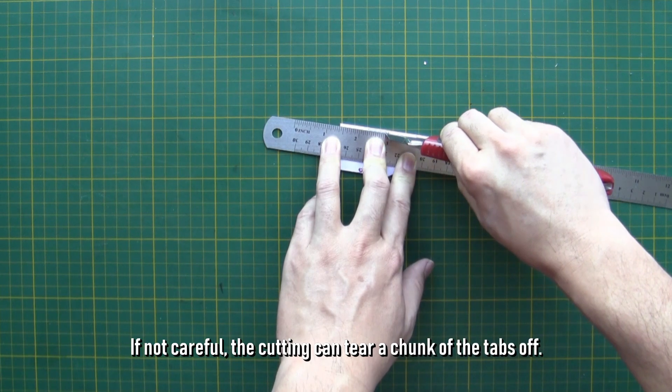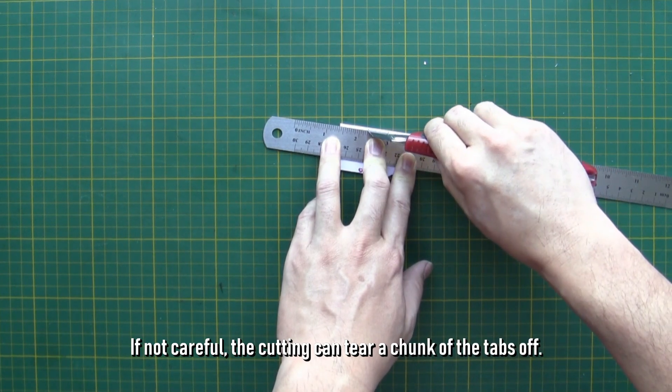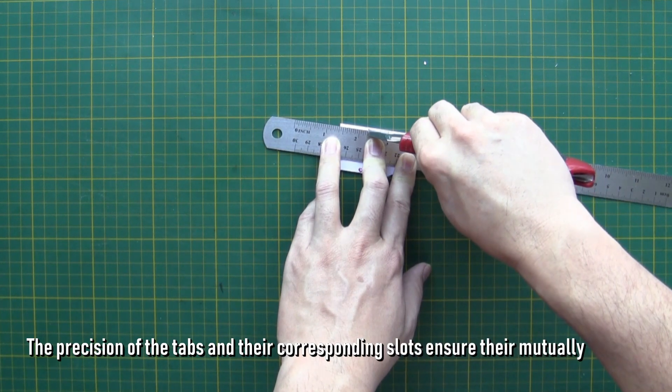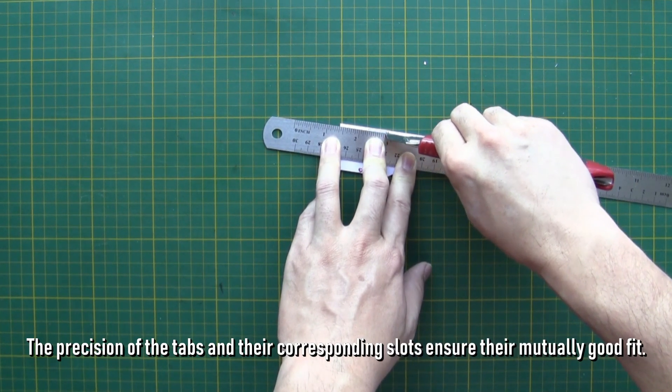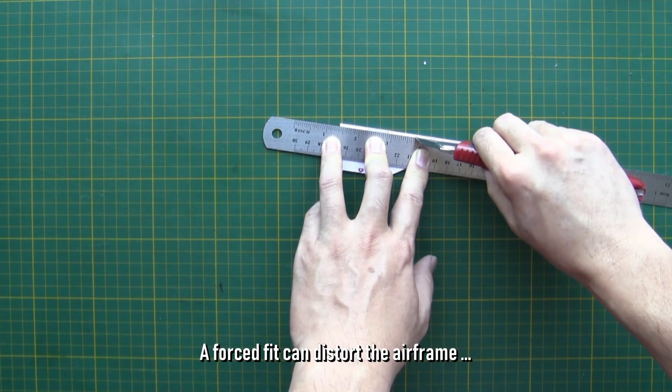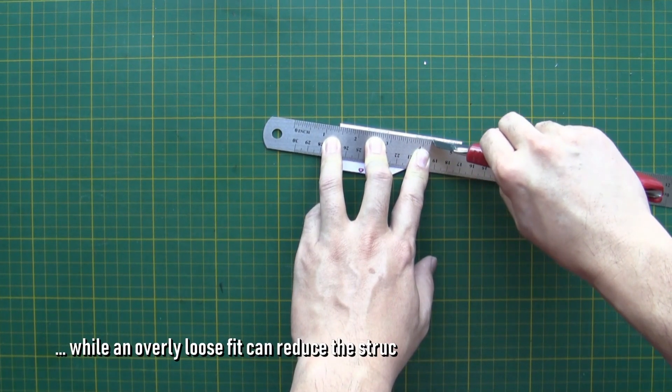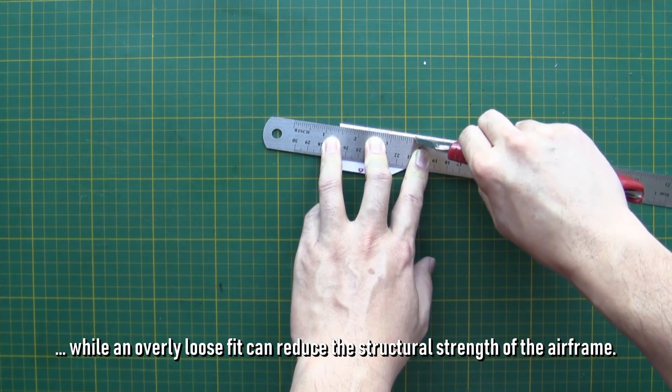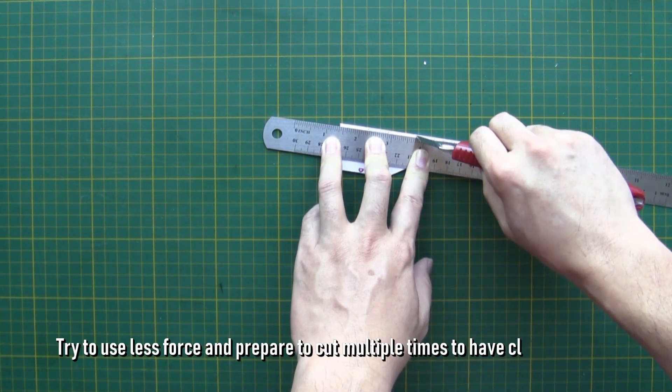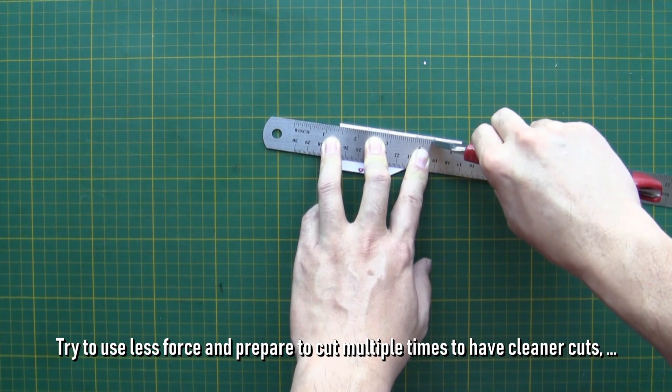If not careful, the cutting can tear a chunk of the tabs off. The precision of the tabs and their corresponding slots ensure their mutually good fit. A forced fit can distort the airframe, while an overly loose fit can reduce the structural strength of the airframe. Try to use less force and prepare to cut multiple times to have cleaner cuts, especially when the knife being used is not that sharp.